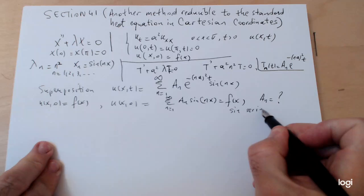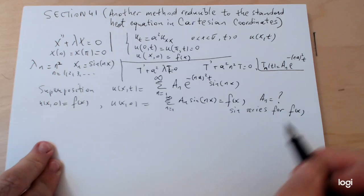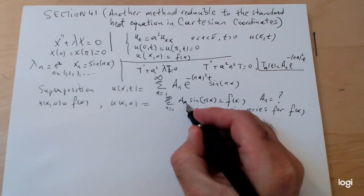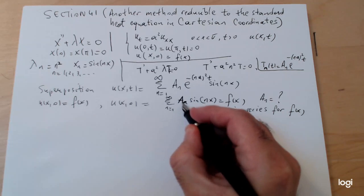Then a_n will come from a sine series for f(x), which again usually we get from the table, or if we don't have the table, then we have to use the formula for computing the Fourier coefficients in terms of integrals.